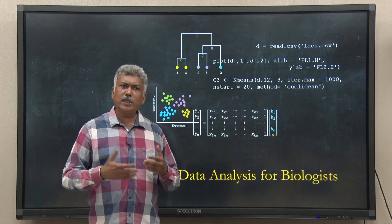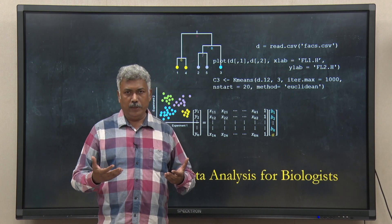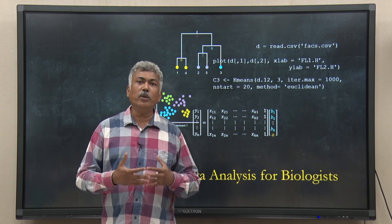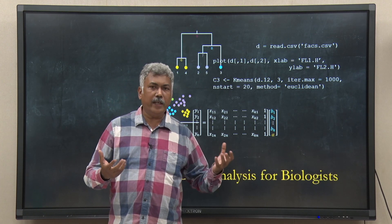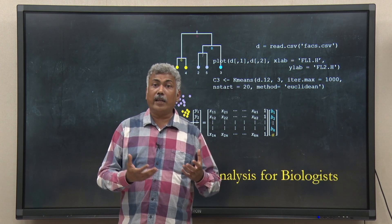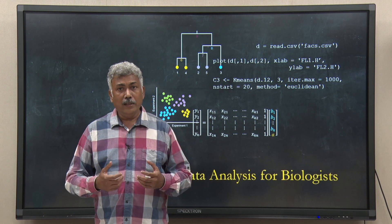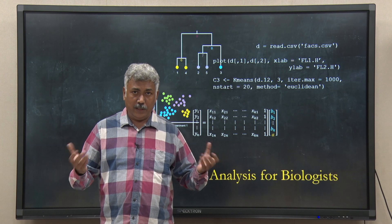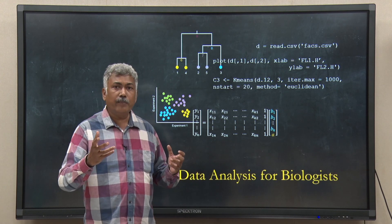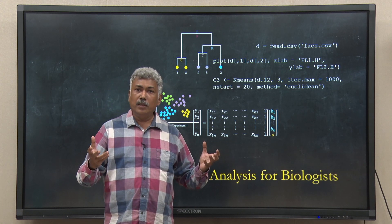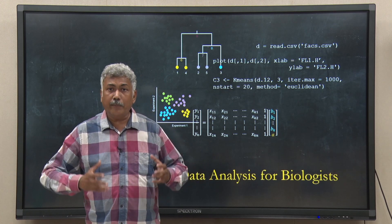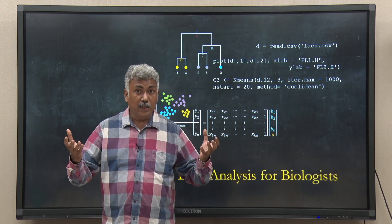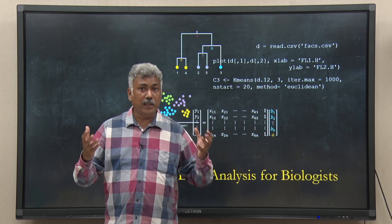But with time, our experiments have changed. They have evolved. They have become more quantitative and biology experiments have become more complicated. For example, take the case of RNA-seq or microarray. You use them to do high-throughput genome-wide gene expression studies. Also, take the example of multicolor flow cytometry. Using that, you can actually capture the expression of ten or twelve markers in millions of cells in one single experiment.